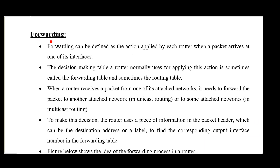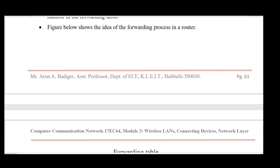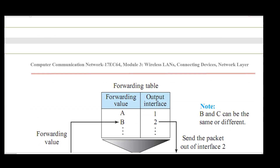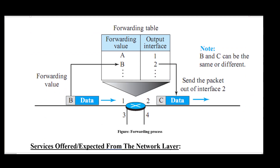Once routing is done, the next functionality is forwarding. When routing is performed, a routing table is created and updated, and based on that table, data is forwarded. This is sometimes called anycast routing. Forwarding simply means sending data from a source IP address to a destination IP address. For example, a value 'b' incoming on port 1 needs to be forwarded — checking the routing table shows output link is 2, so data is forwarded to link 2.